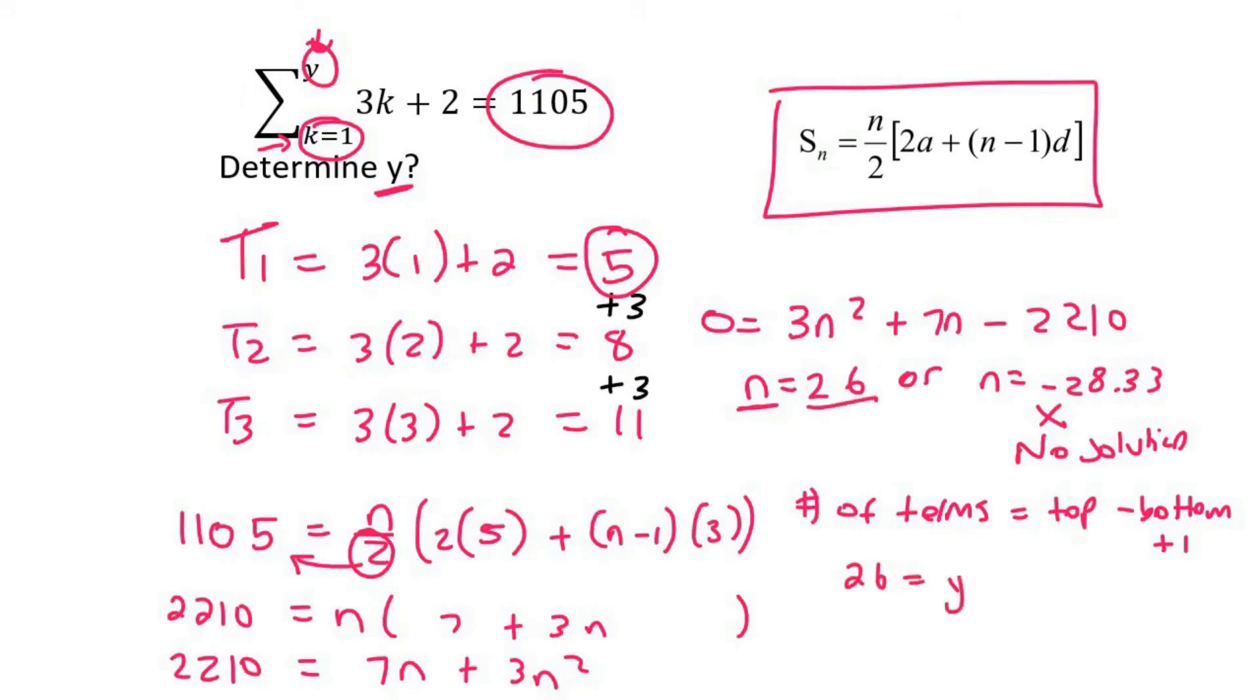So the number of terms, which we've just worked out as 26, is equal to the top letter, which is y, minus the bottom, which is a 1 plus 1. So in this scenario, y will be 26. But if this k value was something different, then you would have to be very careful, because it wouldn't be the same as this 26 value.